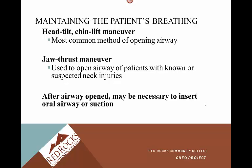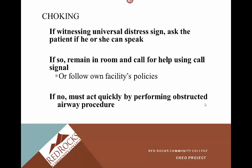After the airway is open, it may be necessary to insert an oral airway or suction, especially when an emergency team responds or in a healthcare facility. For choking, if witnessing the universal distress sign — hands around the neck — ask the patient if they can speak. If they can speak or cough, they still have a partial airway, so encourage them to cough up whatever is obstructing it. If they can't speak or make any noise, the airway is completely obstructed and you must act quickly by performing the obstructed airway procedure.